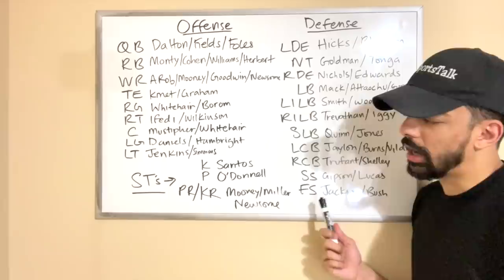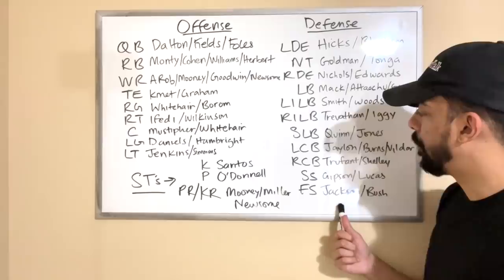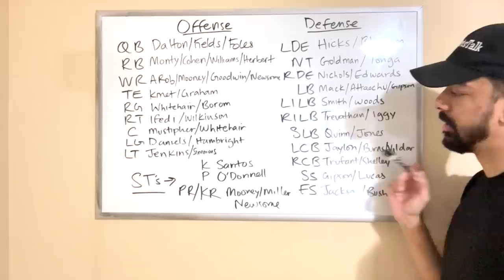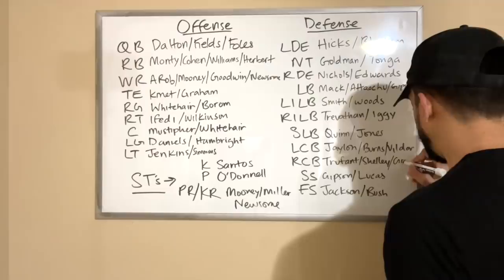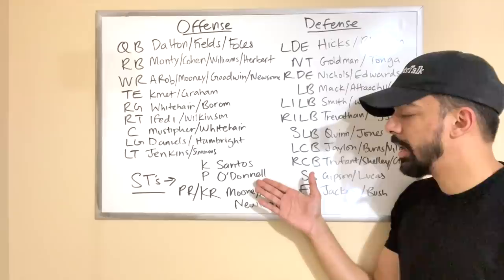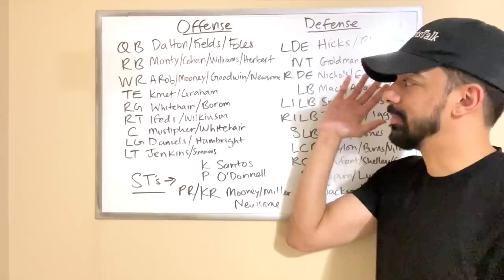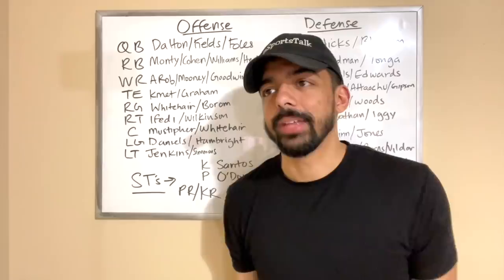Safety: Tashaun Gipson and Eddie Jackson. We're missing Kyle Fuller because he's no longer on the team - replaced by Desmond Trufant, which is a downgrade for sure. I could put Thomas Graham at the cornerback spot since we drafted him, but I'm not sure how much playing time he'll get right away. For special teams: kicker Cairo Santos, punter Pat O'Donnell, and for punt return and kick return I have Mooney, Miller, and Newsome - it could be any of those three.